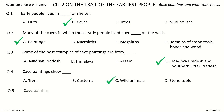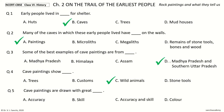Question 5. Cave paintings are drawn with great ___. The options are: accuracy, skill, accuracy and skill, color. Your time to choose. And the answer is accuracy and skill.